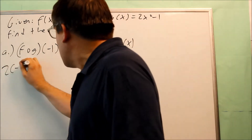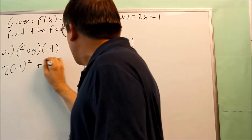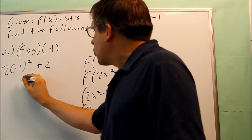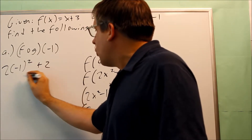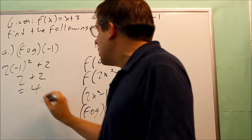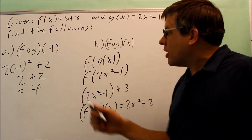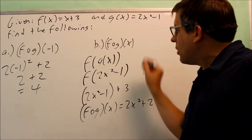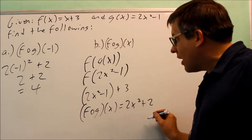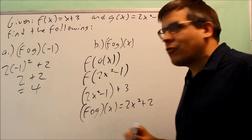So 2x squared plus 2 is what I'm going to use now to answer part a. I want to put negative 1 into the f of g formula. So I have 2 times negative 1 squared plus 2. Negative 1 squared gives you 1, so really you have 2 plus 2, which equals 4. Therefore the answer for part a is 4 — we got that by first doing part b, getting the expression, then plugging in negative 1.